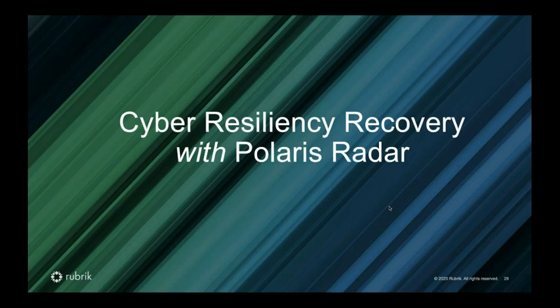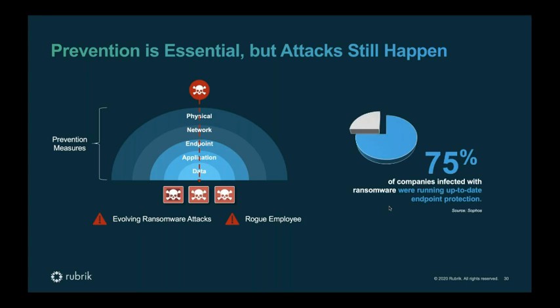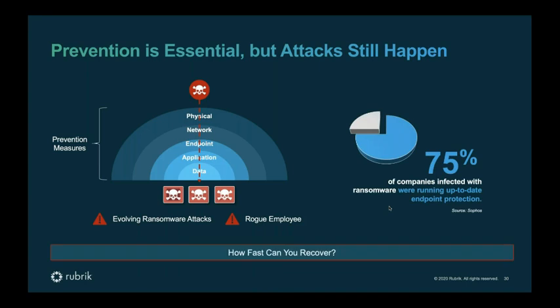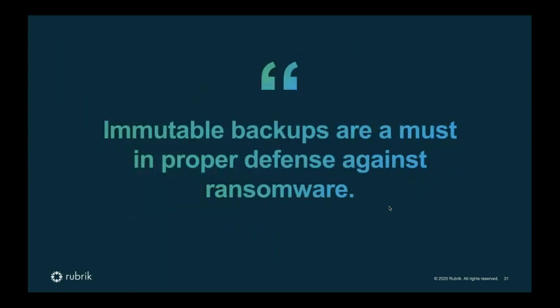Let me walk you through how Rubrik is helping customers address this problem with Polaris Radar. Radar is not a prevention tool — it's never going to stop a ransomware attack from happening, but it is the end-of-the-line defense. If ransomware made it through your endpoint detection, antivirus, and malware defenses and still got into your data set, we're going to tell you it happened, help you understand the scope, help detect anomalous rogue employee behavior, and accelerate recovery — all built on immutable backups as the most proper defense against ransomware.